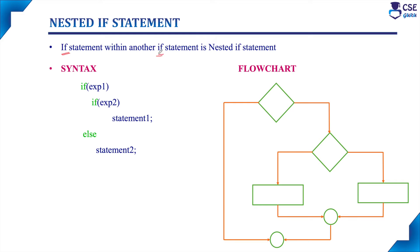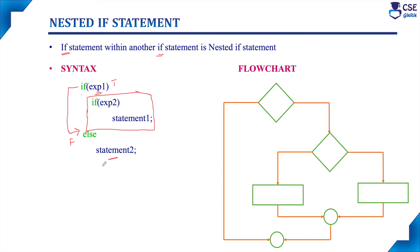A nested if statement is simply an if statement within another if statement. The syntax is: if expression 1 evaluates to true, these two statements execute. When it evaluates to false, it goes to the else part and executes statement 2. But the issue is that since the inner if statement does not have a paired else part, it may pair with the else part corresponding to the outer if statement. This is the dangling else problem.